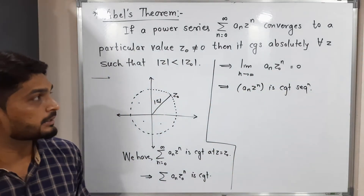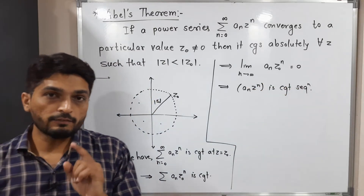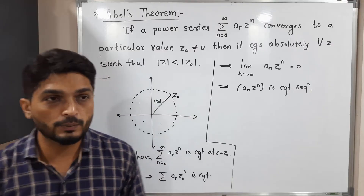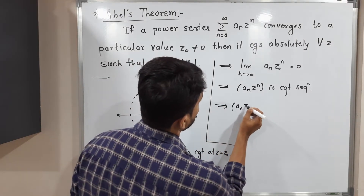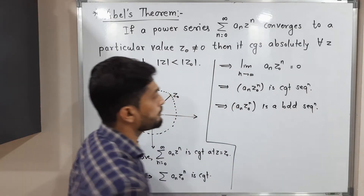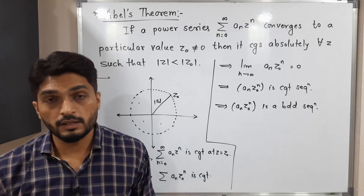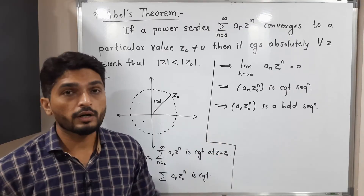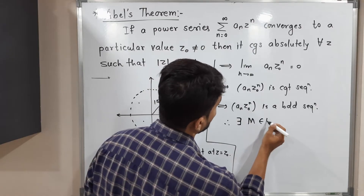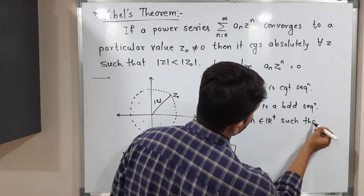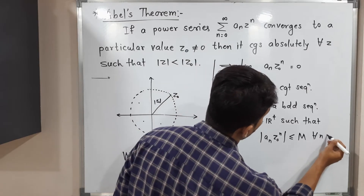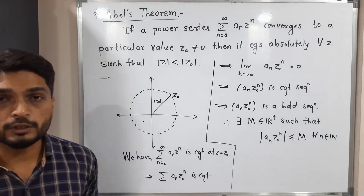So {a_n z_naught^n} is a convergent sequence of complex numbers that converges to zero. Since every convergent sequence is a bounded sequence, {a_n z_naught^n} is a bounded sequence. By the definition of a bounded sequence, there exists a positive real number M such that mod(a_n z_naught^n) ≤ M for all n in the natural numbers. Let us call this inequality (1).